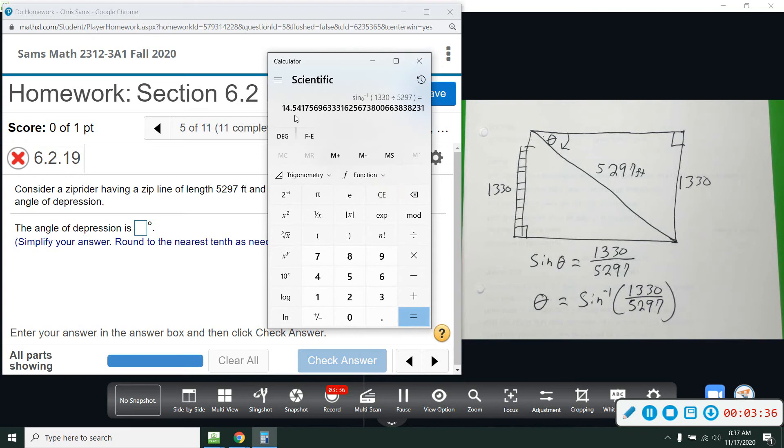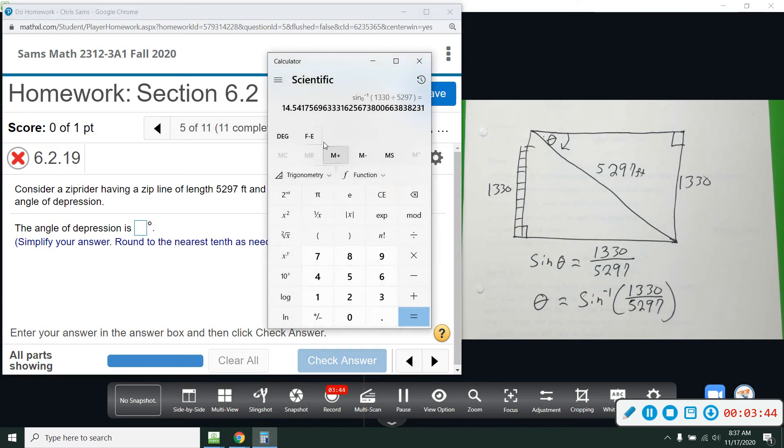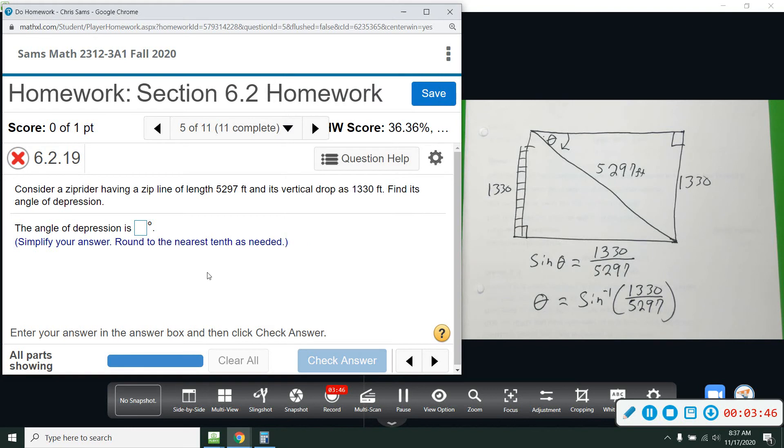So we get 14.54, and we want to round to the nearest tenth, so 14.5. The 4 will not round it, so theta is approximately 14.5 degrees.